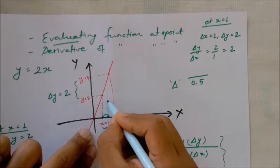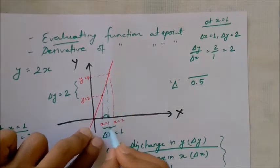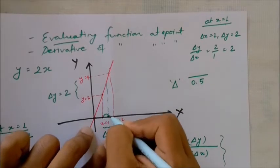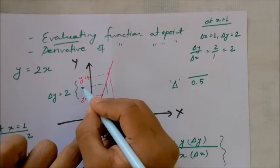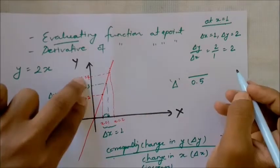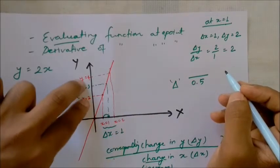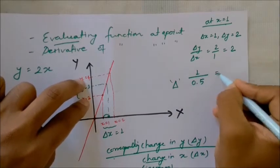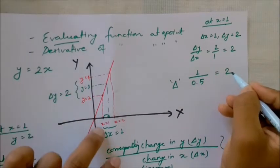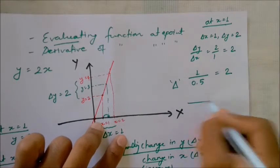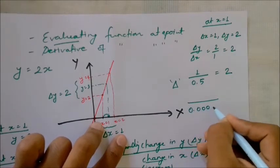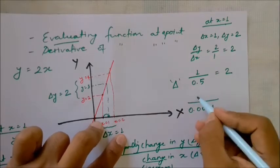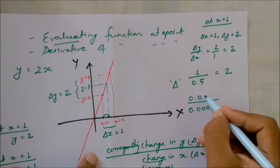When change in x is 0.5, the increase in y is 1. So change in y divided by change in x equals 1 divided by 0.5, which again equals 2. The ratio remains consistent.